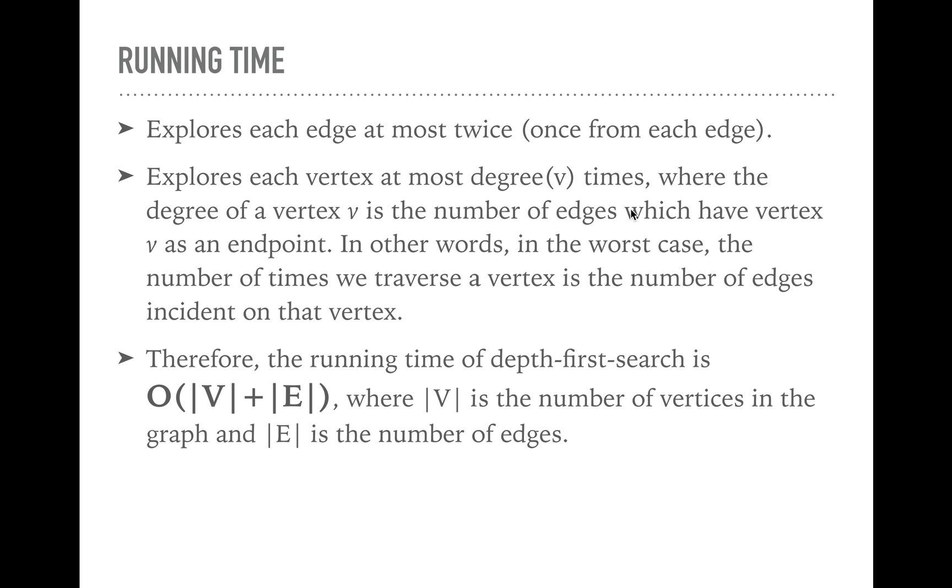Therefore, we have a running time of O(|V| + |E|), where |V| is the number of vertices in the graph, and |E| is the number of edges.